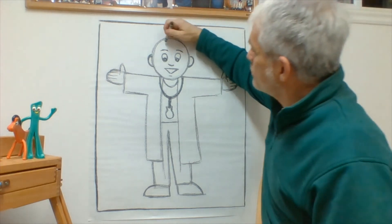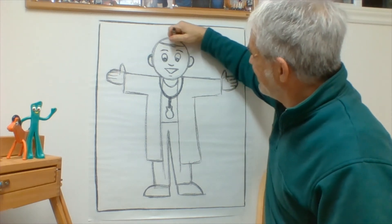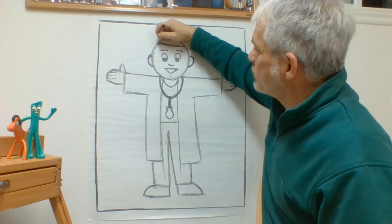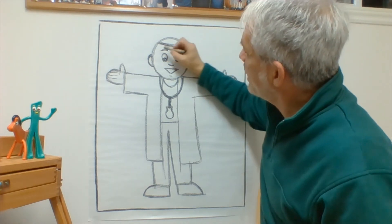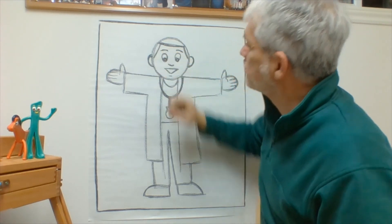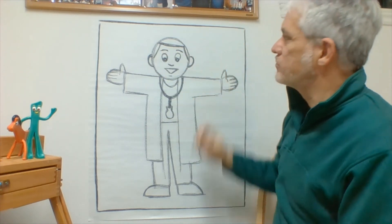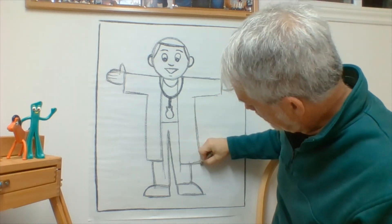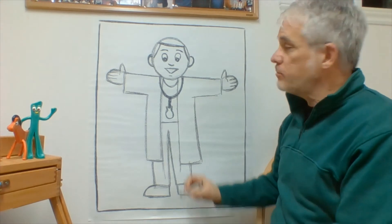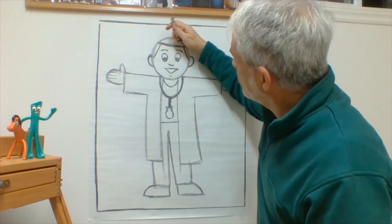Let's give our doctor some hair. So I'm just going to draw a straight line right across the middle of the forehead. And maybe a little bit of hair on this side and a little bit of hair on this side. If we want our doctor to look like a lady doctor, let's see what I can do.